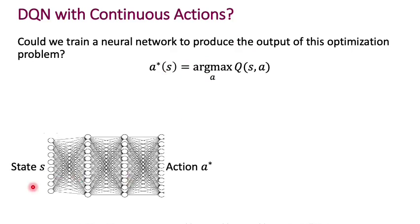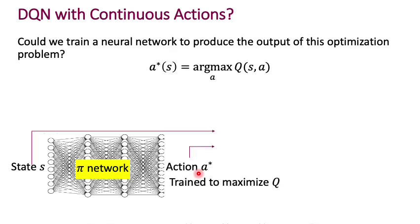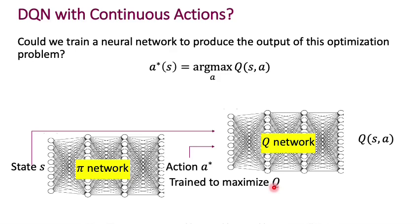So what would that look like? Well, it would look like a network that takes in s as input, produces a star as output. Now, remember, that this mapping from the state to the optimal action is exactly what the optimal policy is supposed to be doing. So let's just call this the policy network pi. Now, we've only so far set up that the inputs are states s and the outputs are the optimal actions a star. How are we going to train this? We're going to train this to maximize the Q function. And we are parameterizing the Q function because we're operating with DQN, we're parameterizing the Q function in a Q network.